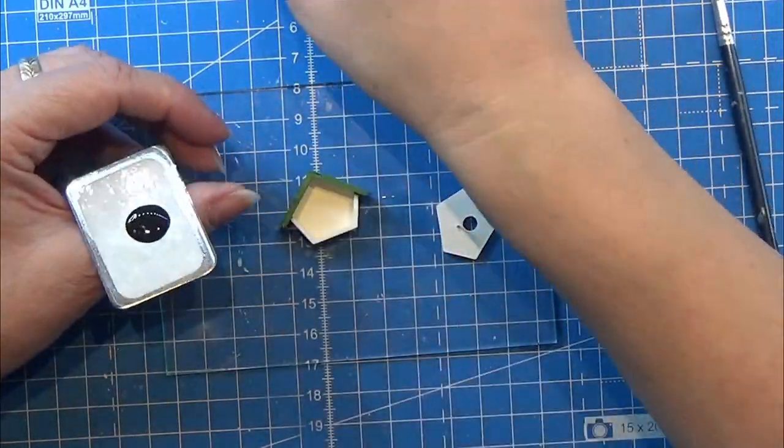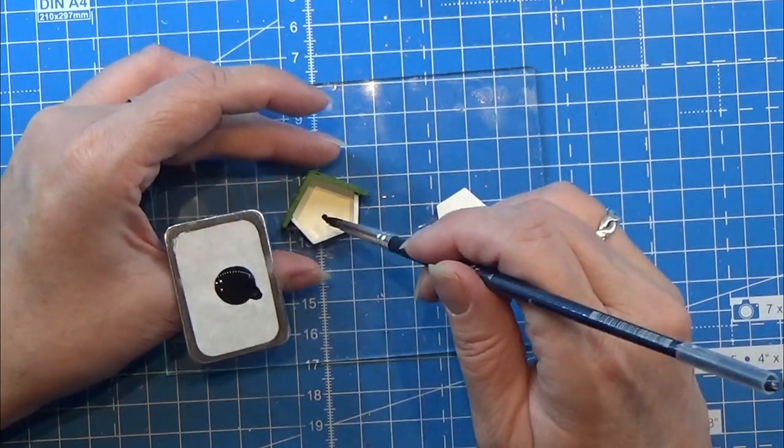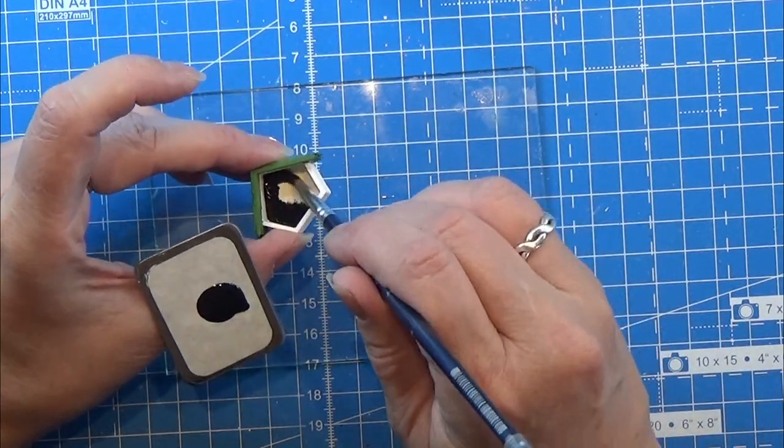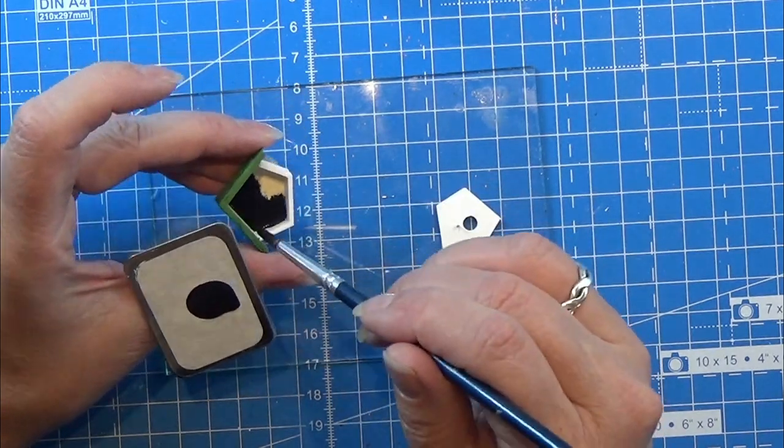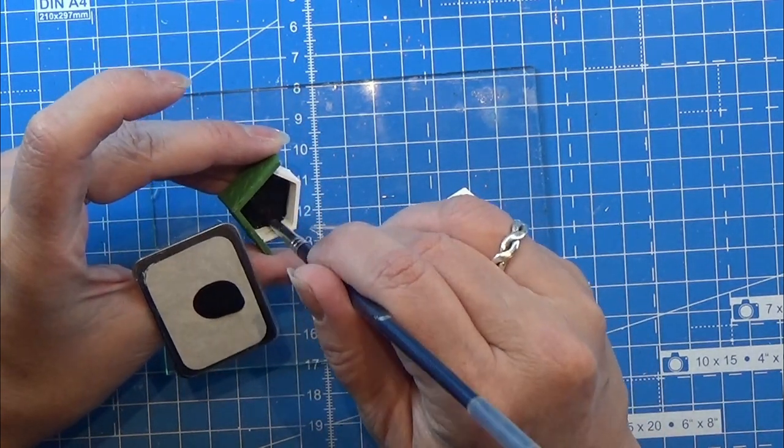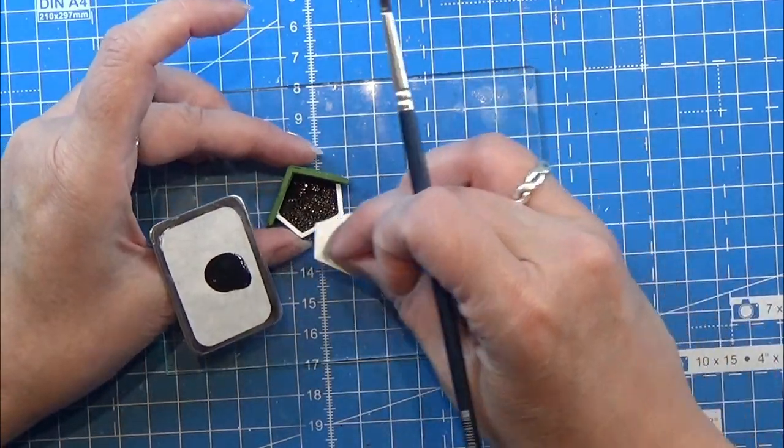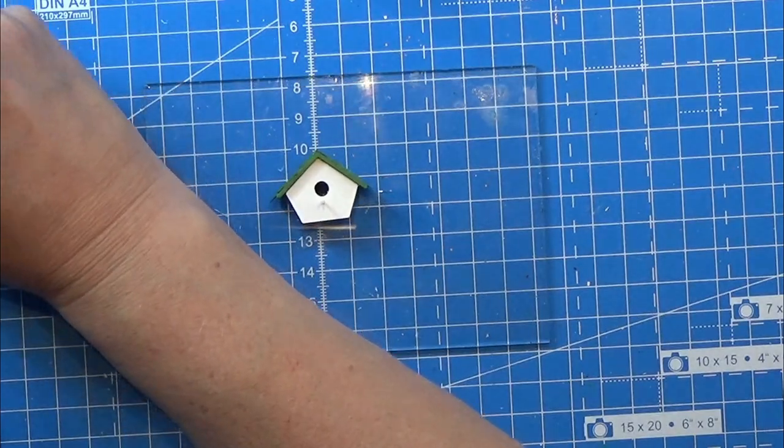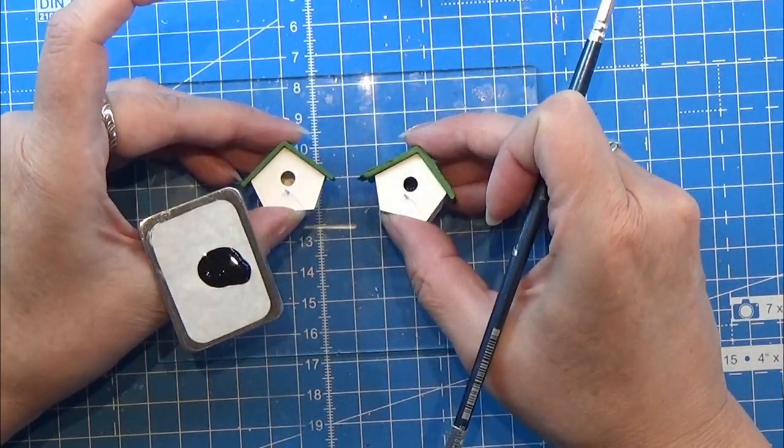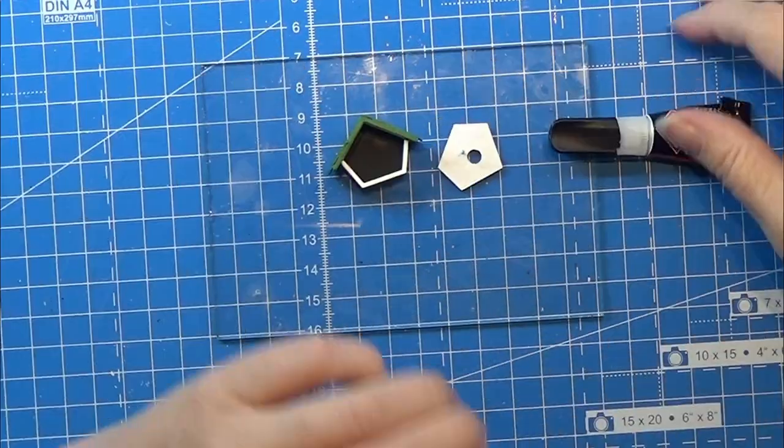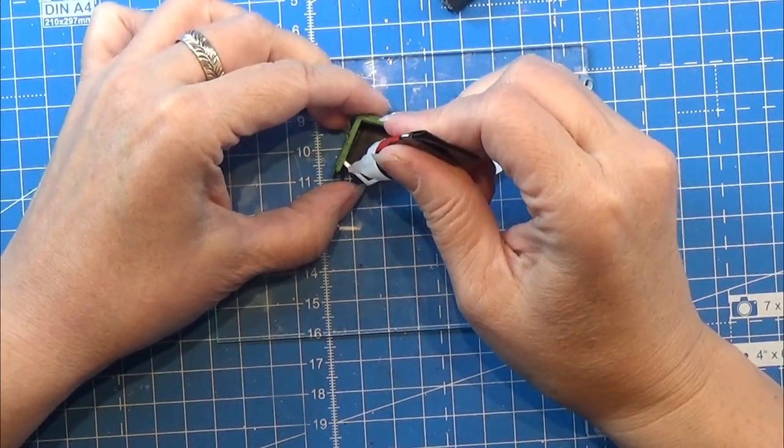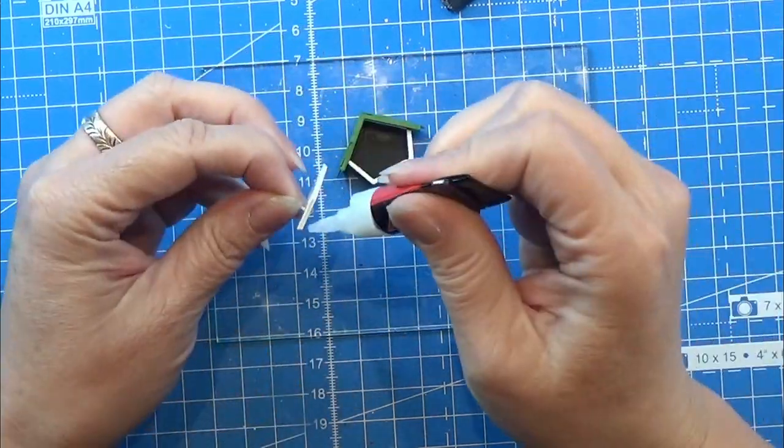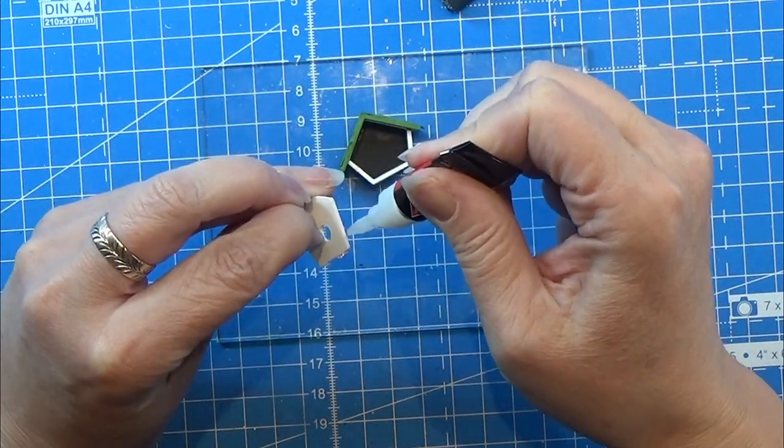Then I am going to take my black Vallejo. Always give it a good shake before you use it, take a little on my painter palette here, and I am going to paint the inside here of the birdhouse. I am only painting the back wall. Here you can see the difference when you look through the little hole. When it is black inside it is more interesting and deep to look into than without the black.